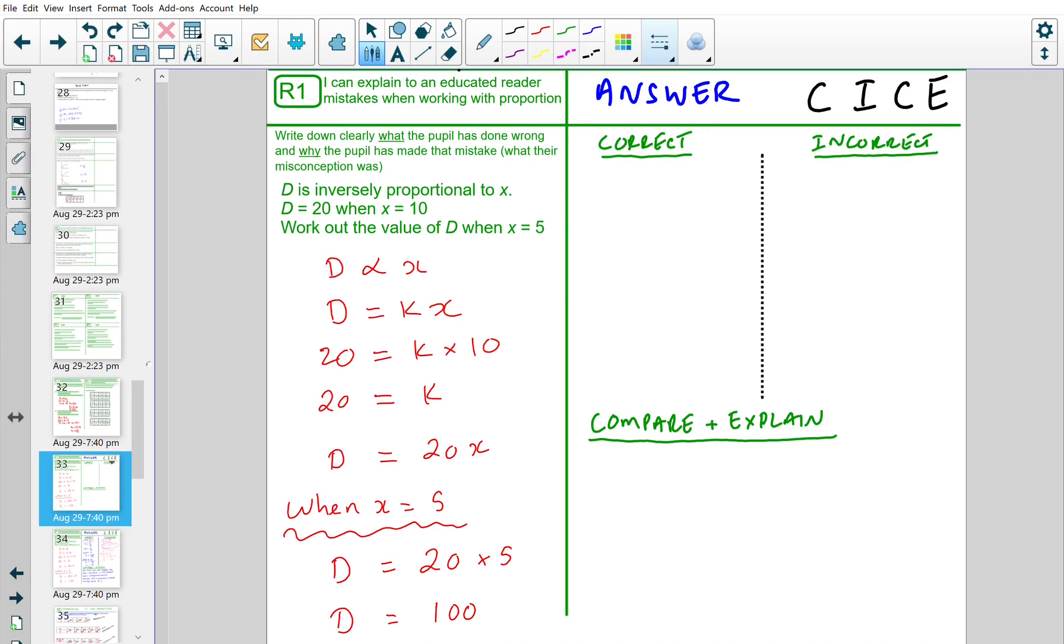So here's the question: D is inversely proportional to x. Having read the first sentence, the very first thing that I could do is express this mathematically. Keyword here, inversely, meaning that it needs to be 1 over something. So D is inversely proportional to x. Then we can replace the proportional symbol with equal k. This is my step 1.